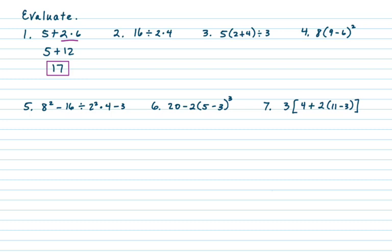On number two we have 16 divided by 2 times 4. We have a division and a multiplication — they're equal priority, so we do the one on the left first. 16 divided by 2 is 8, times 4, so we get 32.